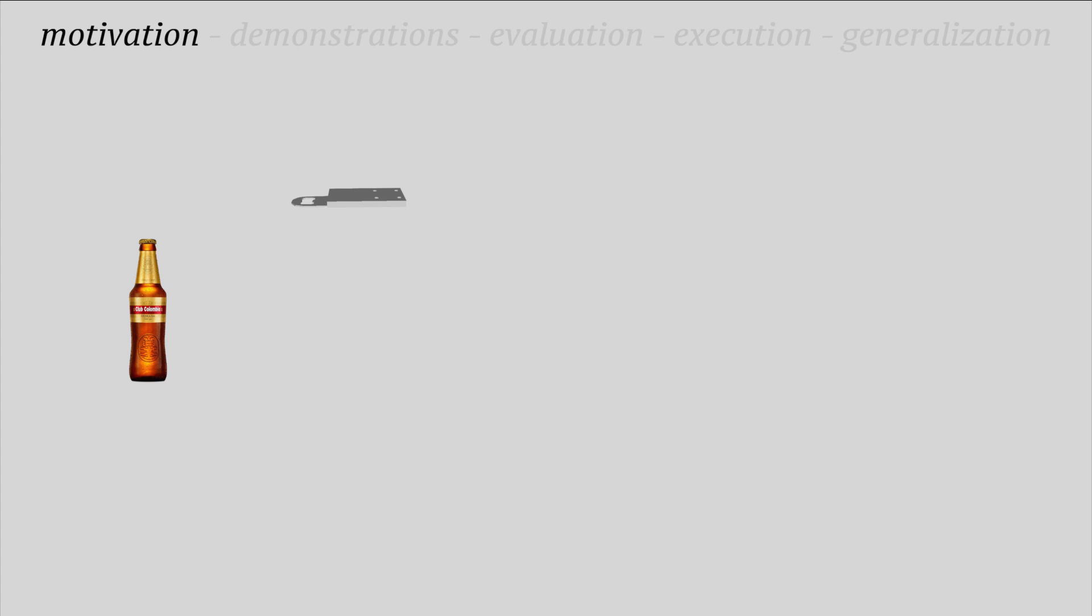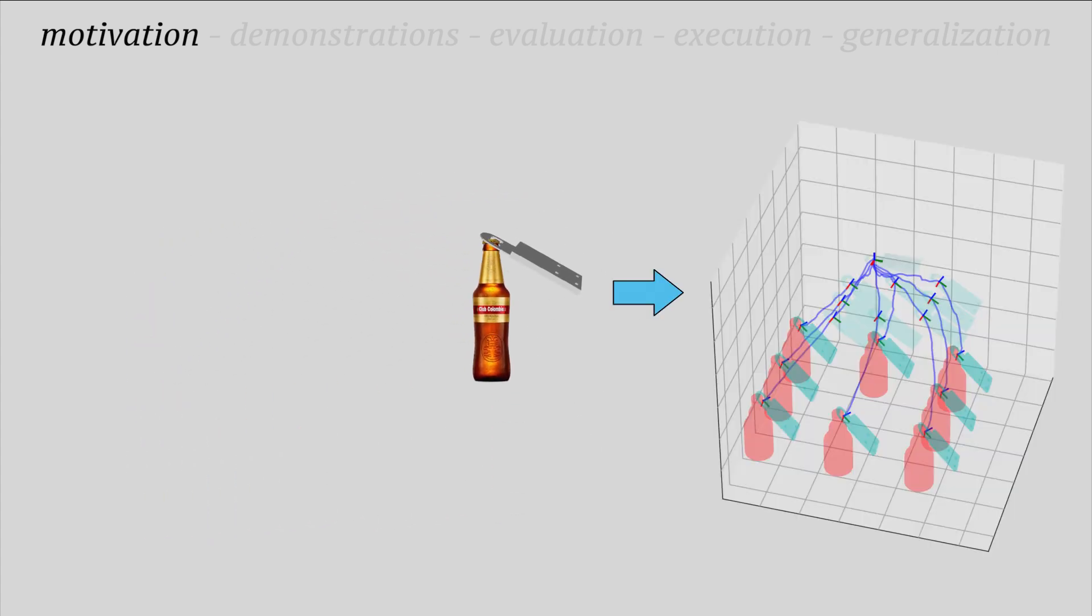Our motivation is to teach robots how to perform manipulation tasks, for example bottle opening. We hypothesize that humans have an estimate on how to move an opener to hook and remove a cap from a bottle, while the required fine motion is performed having contact wrenches as feedback.